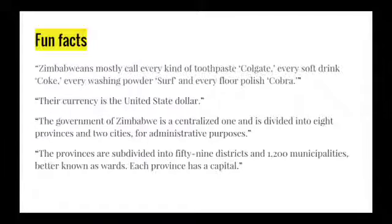Moving on to some fun facts: Zimbabwe mostly calls every kind of toothpaste Colgate, every soft drink Coke, every washing powder Surf, and every floor polish Cobra. Some political and governmental facts: their currency is actually the United States dollar — I had no clue. The government of Zimbabwe is a centralized one, divided into eight provinces and two cities for administrative purposes. These provinces are subdivided into 59 districts and 1,200 municipalities, better known as wards. Each province has its own capital.